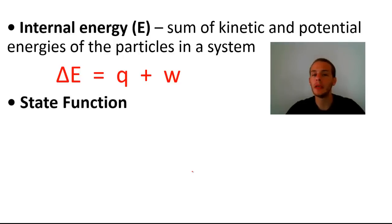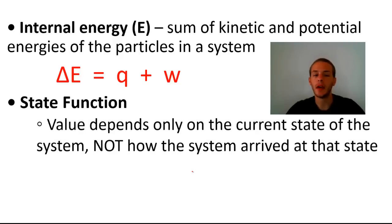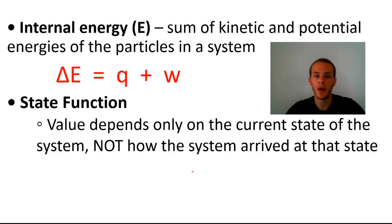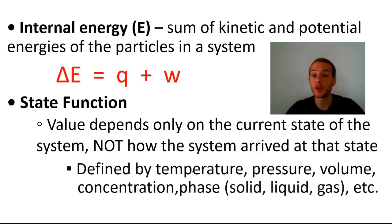Internal energy happens to be a so-called state function. A state function is a property whose value depends only on the current state of the system and not on how the system arrived at that state. The state of a system is defined by numerous different parameters such as temperature, pressure, volume, concentration, and phase — whether it's solid, liquid, or gas.